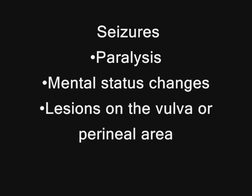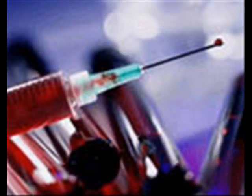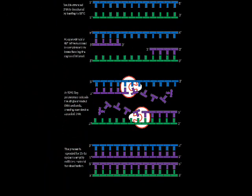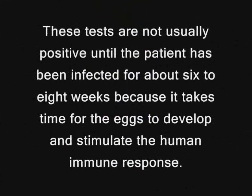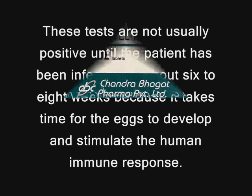Fissures on the vulva or the perineal area. Blood tests and, more recently, polymerase chain reaction tests can help confirm the diagnosis, but positive results may only indicate past exposure. However, these tests are not usually positive until the patient has been infected for about 6 to 8 weeks, because it takes time for the eggs to develop and stimulate the human immune response. The PCR test is available from the U.S. Centers for Disease Control and Prevention.